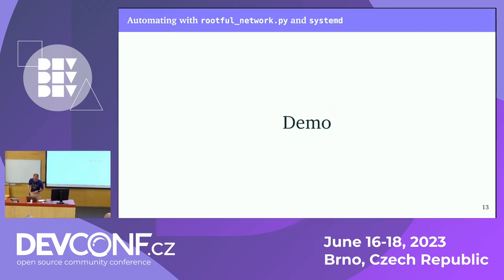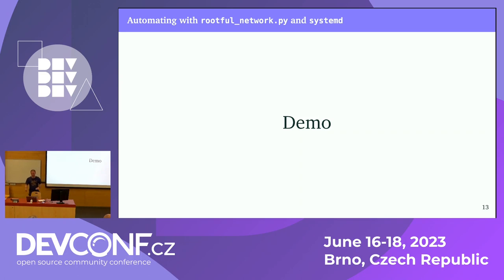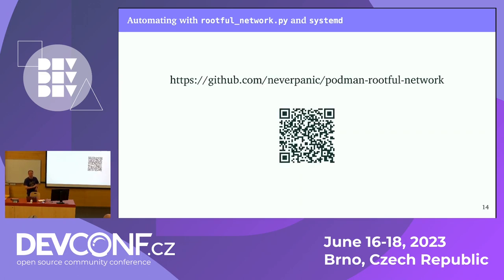I also automated the same thing with systemd — I put the exact same commands in a systemd service file. For lines that require root privileges, systemd lets you specify a '+' at the beginning of the command and that will run them as root. That's a nice trick to get all of this in a single systemd service file. The details and the rootful network Python script will be on the website linked in the last slide.